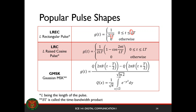We also have Gaussian minimum shift keying with two parameters — BT, called the time-bandwidth product. Note that GMSK is actually used in cell phones. If you're familiar with GSM, that is a standard currently in use — a 2G standard — and it uses Gaussian minimum shift keying. Basically, it uses a symbol scheme with memory.